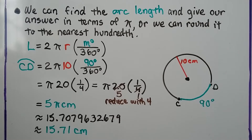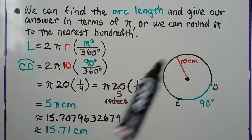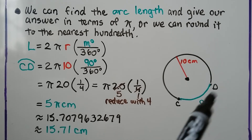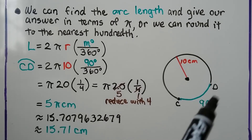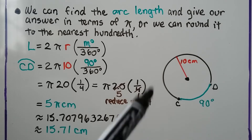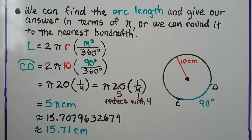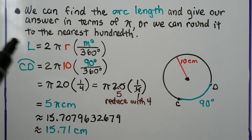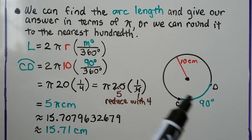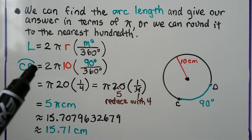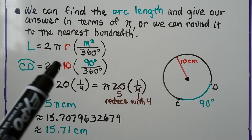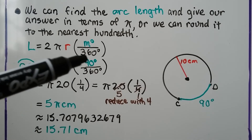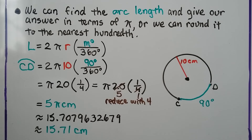Now take a look at this diagram. We have a circle, and we can see that this arc right here is 90 degrees. We can see the radius is 10 centimeters. Using our formula and putting in our information, arc CD is equal to 2π(10), because our radius is 10, and that's going to be multiplied by 90 degrees over 360 degrees.